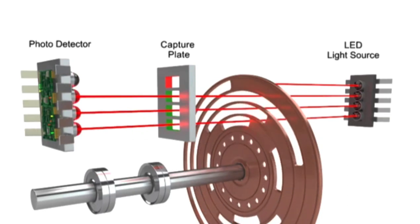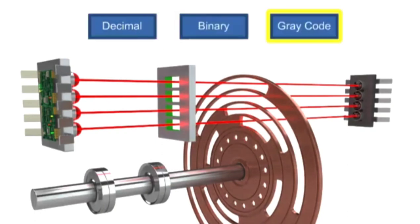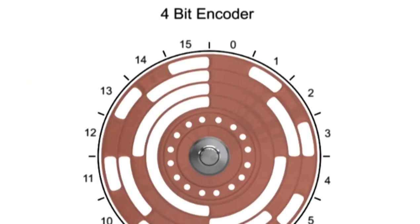The most common types of numerical encoding are decimal, binary, and gray code. In a four-bit encoder there are 16 unique combinations or numeric code every 22.5 degrees.